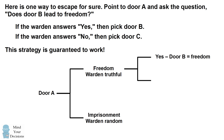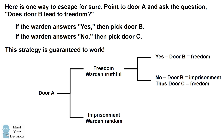Similarly, if the warden says door B does not lead to freedom, the warden is answering truthfully, which means door B leads to imprisonment. That means the other door, door C, leads to freedom. So you can see that if the warden answers yes, you should pick door B, and if the warden answers no, then you should pick door C.